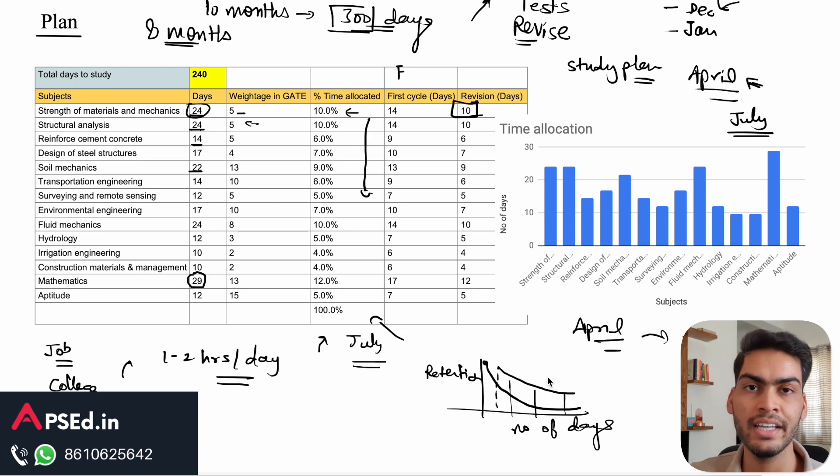To avoid that, you need to revise it. If you are finishing one subject today, you need to revise that topic within two weeks. Your first time understanding will go away very soon, so you need to consolidate that within two weeks. Then your second revision can be a bit late. If you finish at the end of April, next time you can revise that topic in May, and the third revision you can revise somewhere in August.